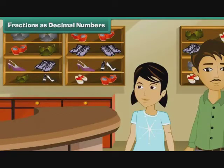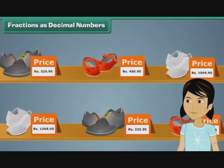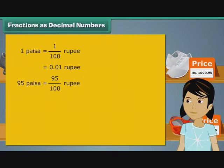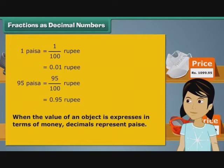Arpita went with her father to buy her school shoes. Prices of footwear in the store were expressed as decimal numbers. She wondered what the decimals in the prices meant. 100 paise make 1 rupee. In other words, 1 paise is 1 by 100th of a rupee. It can also be written as 0.01 rupee. Therefore, 95 paise form 95 by 100th of a rupee. We can express 95 paise as 0.95 rupee. Therefore, the decimals in the footwear stood for paise. When the value of an object is expressed in terms of money, decimal represents paise.